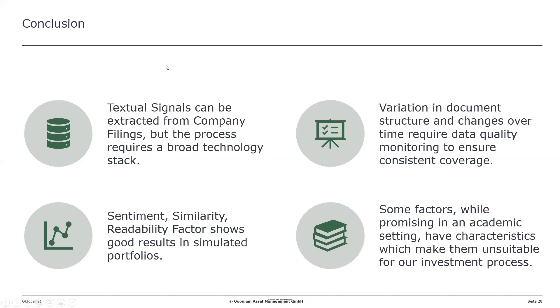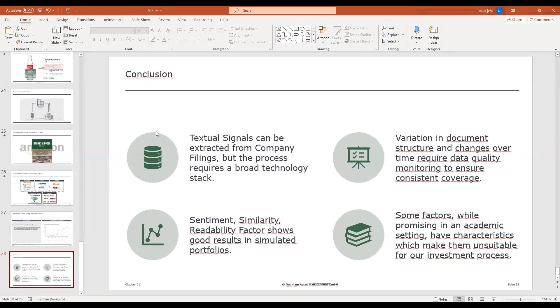Thank you for the presentation — we do have some questions. The first question is: why is the benchmark a horizontal line? We basically show the cumulative index value relative to the benchmark, so the benchmark is a horizontal line. The next question: how long does it take to process all historical data and how long for daily processing? The historical data took about a week in parallel. Daily processing is around one or two hours.